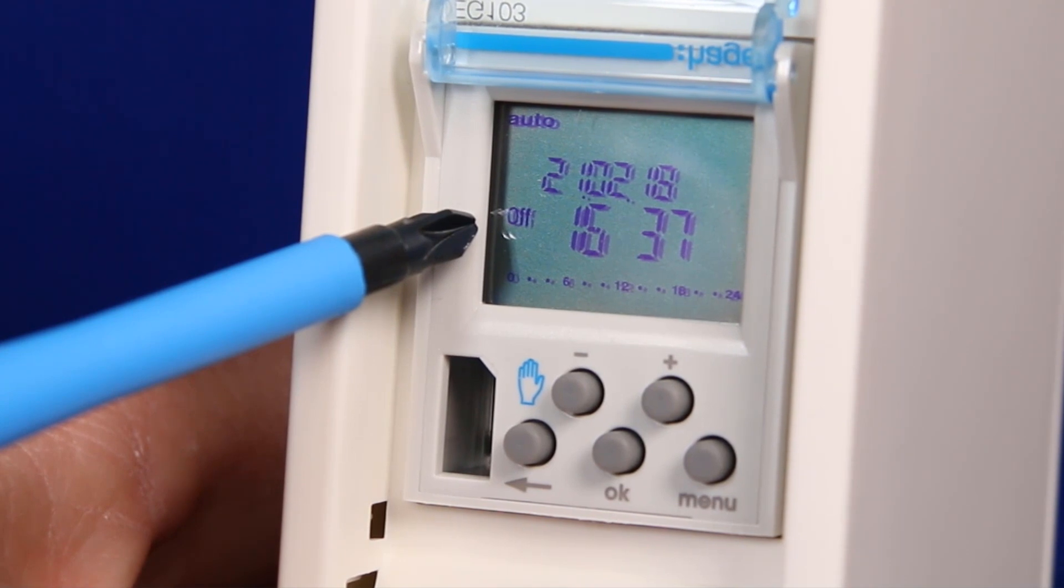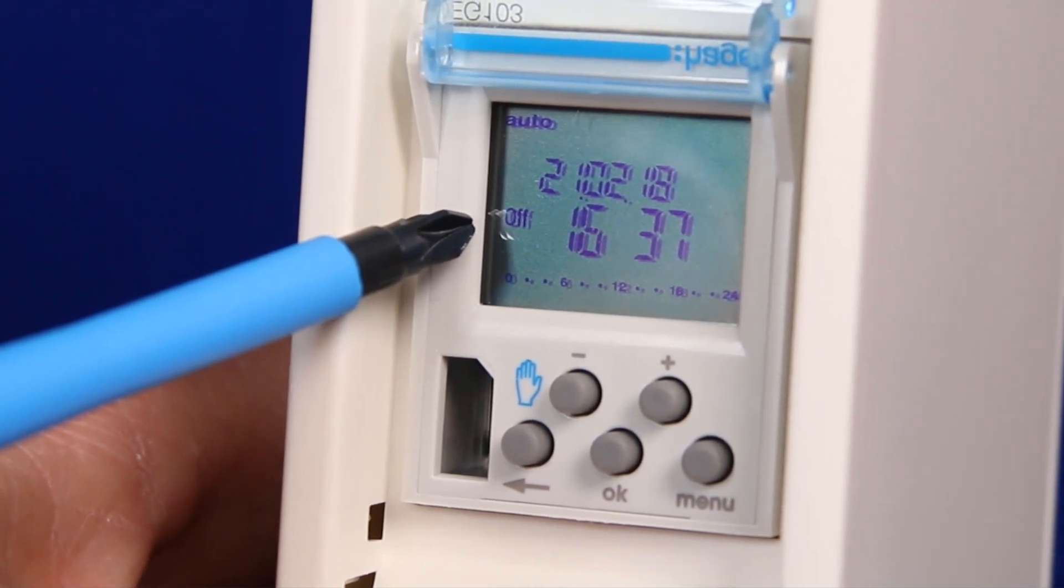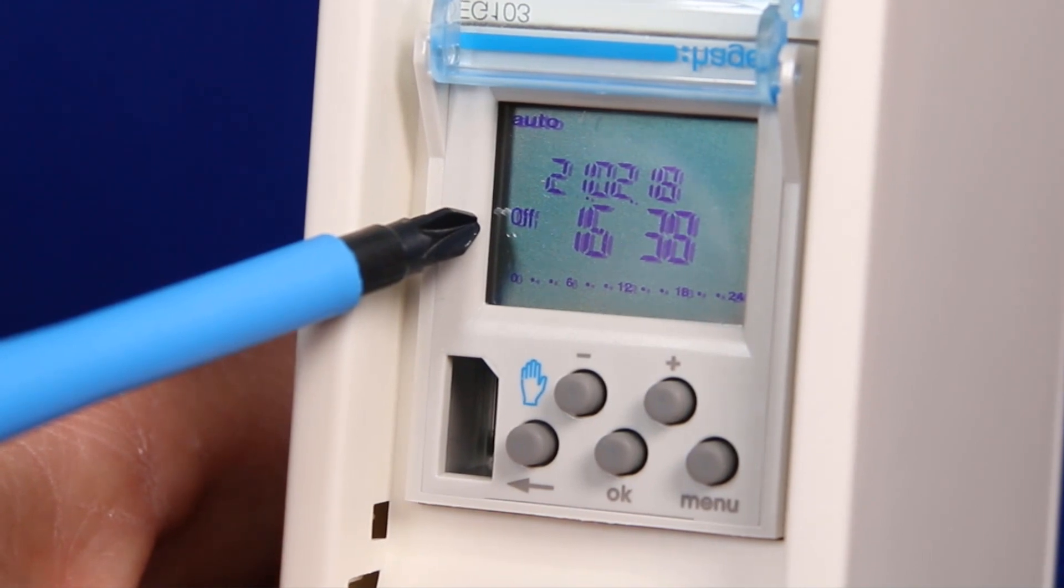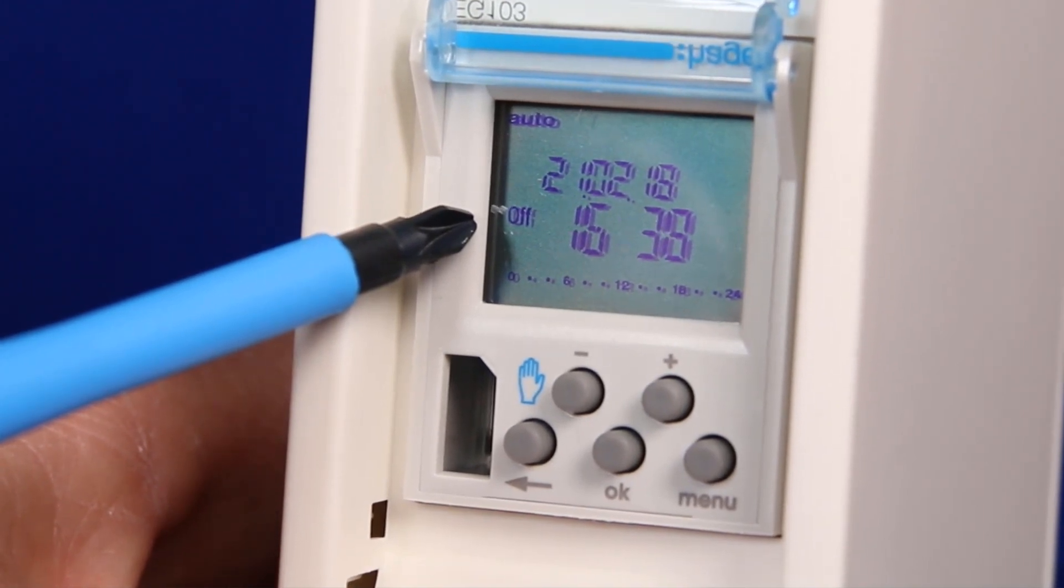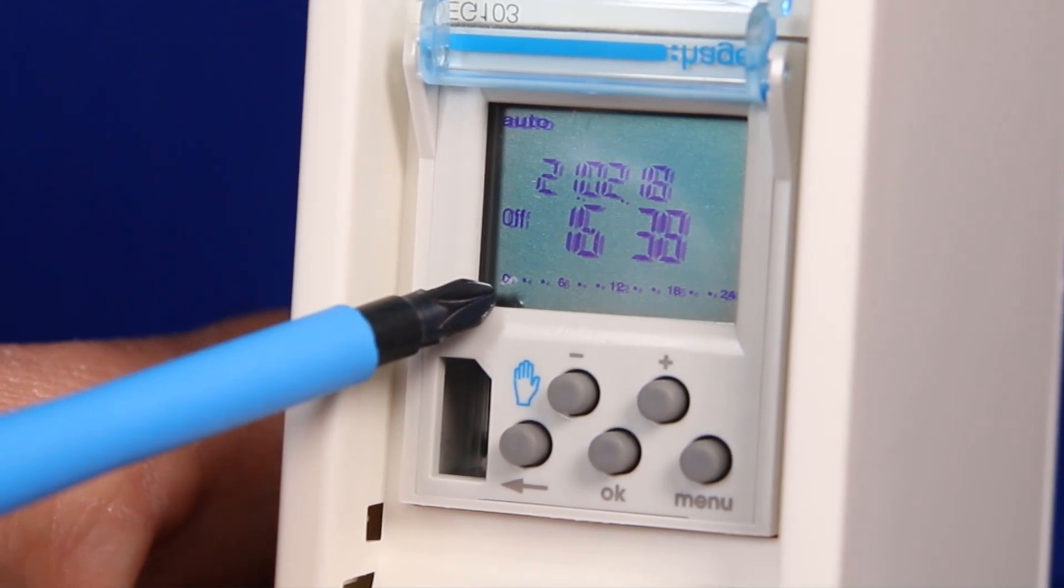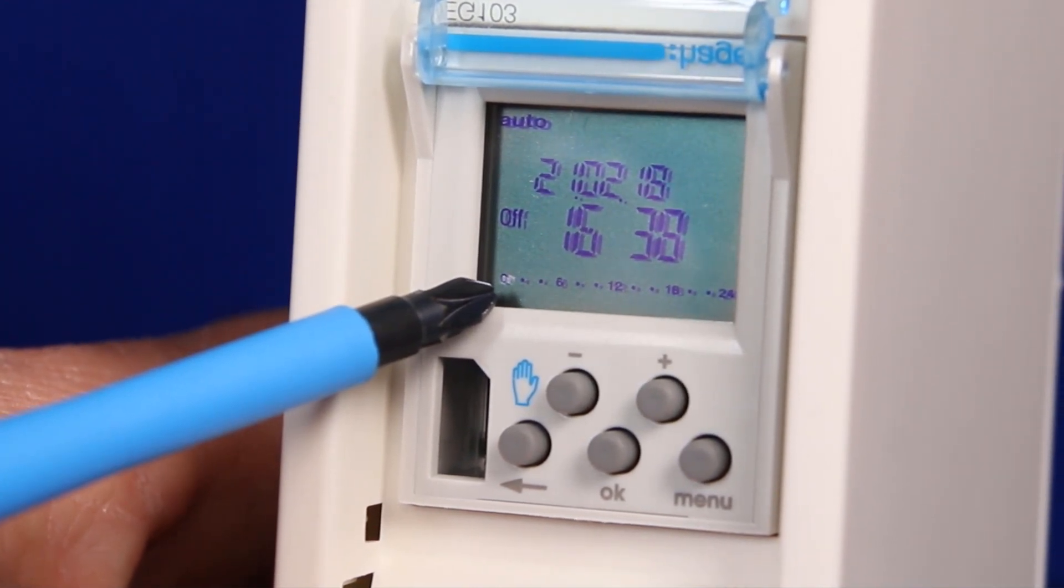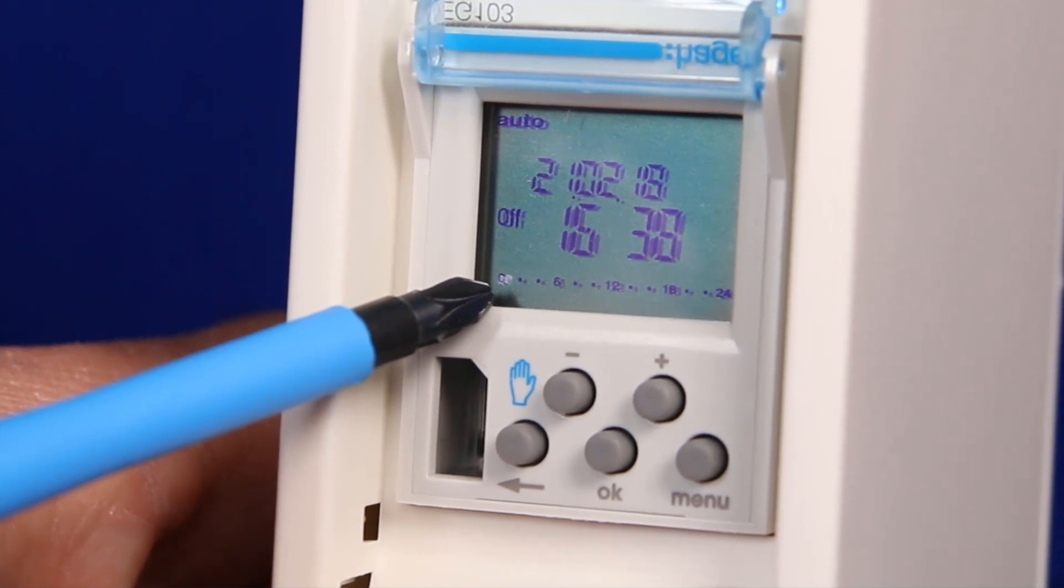You can set the timer for each day or for groups of days, e.g. weekdays and weekends differently. Day one represents Monday and day seven represents Sunday. In this example we will set all seven days to be the same time, turning on at 9am and off at 4pm.